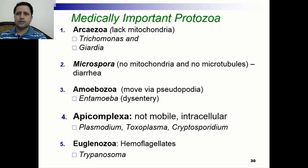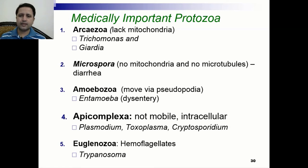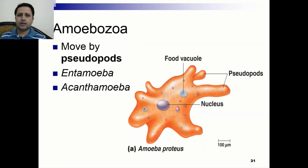Medically important protozoa include Archaezoa, which lack mitochondria — examples are Trichomonas and Giardia. Microspora have no mitochondria and no microtubules and cause diarrhea. Amoebozoa move by pseudopodia — an example is Entamoeba, which causes dysentery. Apicomplexa are non-motile and intracellular — Plasmodium, Toxoplasma, and Cryptosporidium are examples. Another type is Euglenozoa, which are hemoflagellates, and Trypanosoma is one example. The structure of Entamoeba shows food vacuoles, a nucleus, and pseudopods used for movement.